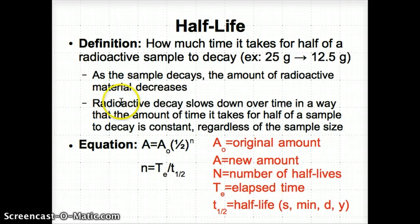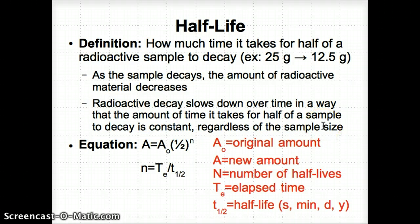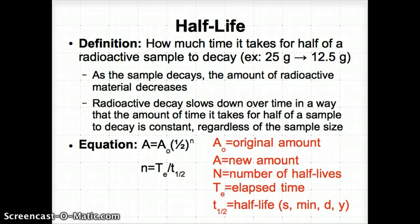What also ends up happening is radioactive decay eventually slows down over time, in a way that the amount of time it takes for half of a sample to decay is constant, regardless of the sample size. So even if you have 100 grams, eventually that'll halve to 50 grams, then 50 to 25, then to 12.5. The amount of material actually decreasing goes lower and lower, but the amount of time it takes to keep halving is the same every single time.